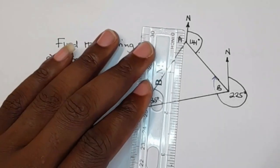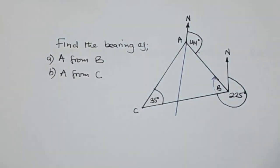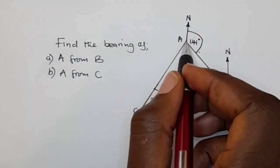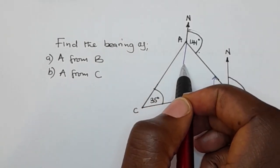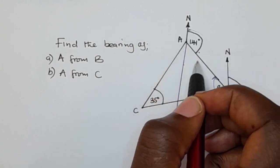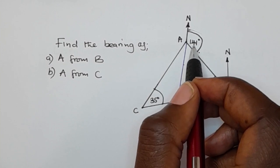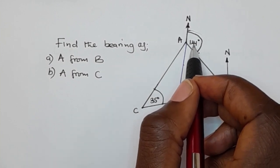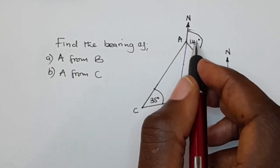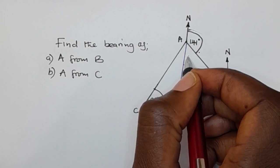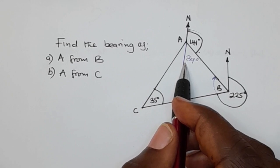We've extended the north like this. So now, this is a straight line and the total angles on a straight line is 180 degrees. Out of 180, we have been given 141 degrees here. So to find this angle, we say 180 minus 141 degrees, which gives 39 degrees. So this angle here is 39 degrees.